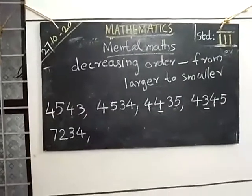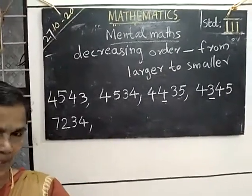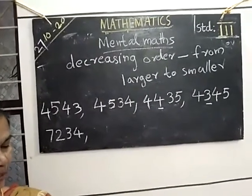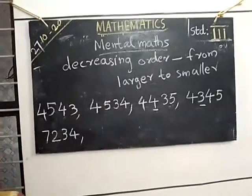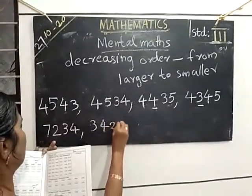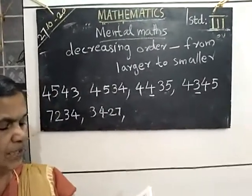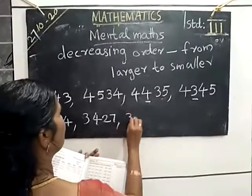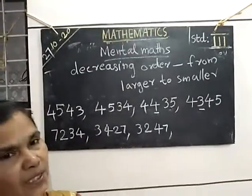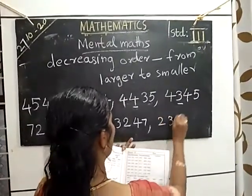Then next number — after that there are only 3,000s. We start with 3,000. There are two 3,000s, so we have to compare the hundreds place: 200, 300, 400, 200. Which is larger? 3,427. Then the next is 3,247. Which is the last number? 2,000 — that is the smallest, so you write 2,347 last.